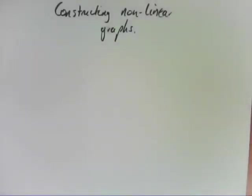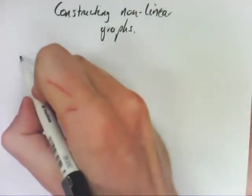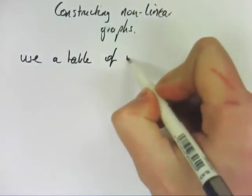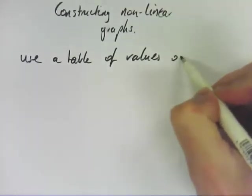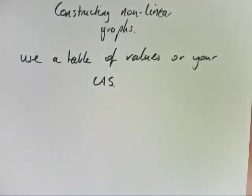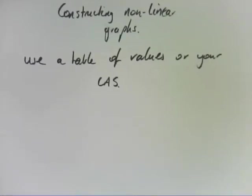When it comes to constructing nonlinear graphs, I have one thing to say: use a table of values or your CAS. It doesn't matter which you do. If they ask you to do it by hand, then you need to use the table of values, of course. But, your CAS calculator—that's the easiest way to do it.